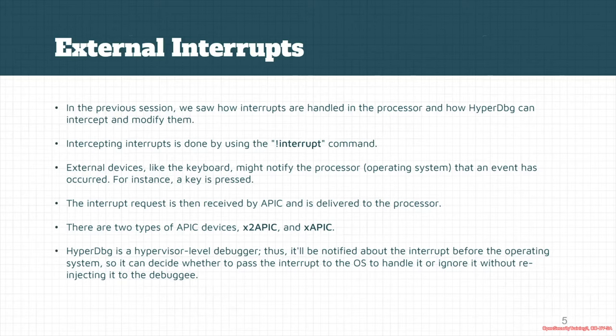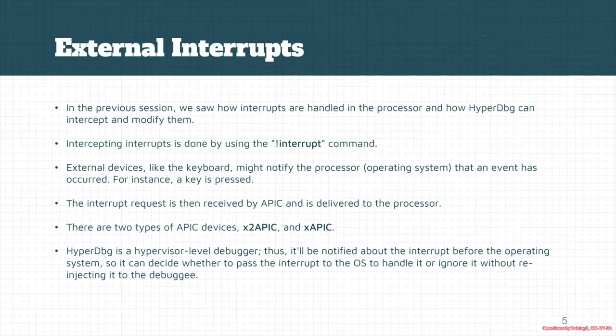Most of the time when an interrupt is received, it's the responsibility of the APIC device to handle and deliver it to the processor. There are two types: x2APIC, which handles through MSR registers, and xAPIC, the older version, handled by a physical base address. Since HyperDbg is a hypervisor-level debugger, it's notified about interrupts before the operating system, so we can decide whether to pass, handle, or ignore the interrupt.